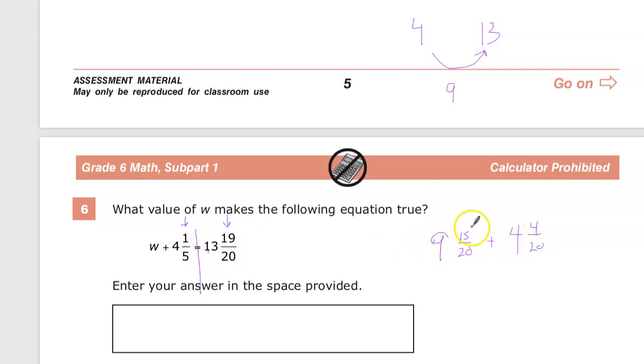Well, 9 plus 4 is 13, 15 plus 4 is 19, and I end up with my answer. So this is the part that I need to get to my final answer.